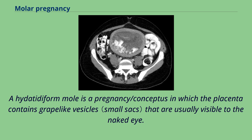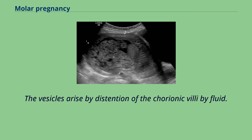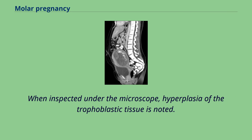A hydatidiform mole is a conceptus in which the placenta contains grape-like vesicles that are usually visible to the naked eye. The vesicles arise by distention of the chorionic villi by fluid. When inspected under the microscope, hyperplasia of the trophoblastic tissue is noted.